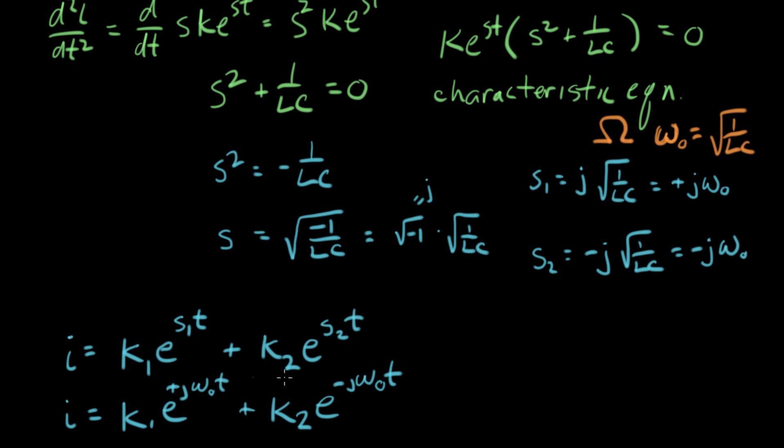And what we need to do now, we found s, we found two values of s. Now we have these two constants, we've got to work those out. So in the next video, we'll use the initial conditions to figure out what k one and k two are.